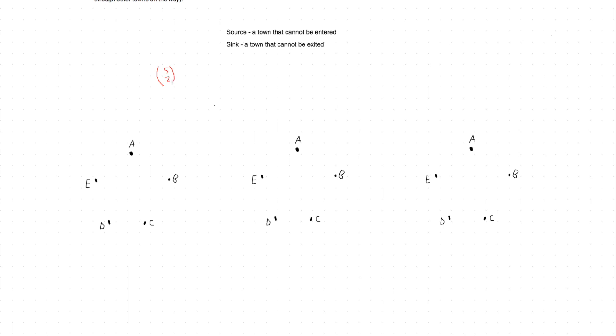It's easier to count all the bad cases and subtract from the total—we'll use complementary counting. First, how many total configurations are there? There are 5 choose 2 = 10 roads, since we choose any pair of towns and there's exactly one road between them. Each road can be assigned one of two directions, so in total there are 2^10 configurations that may or may not contain a sink or source.